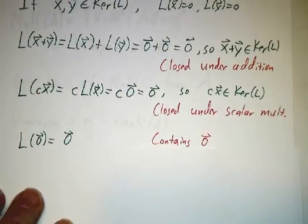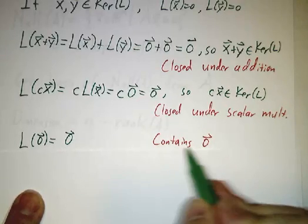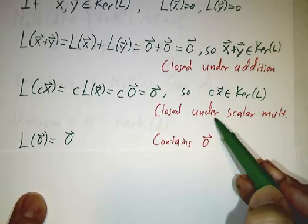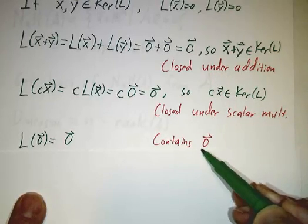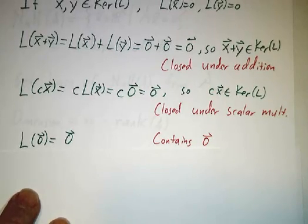Finally, if you apply L to zero, you always get zero. So the kernel contains zero. Now, we've seen any subset that's closed under addition, closed under scalar multiplication and contains zero, is a subspace. So kernel of L is a subspace of V.